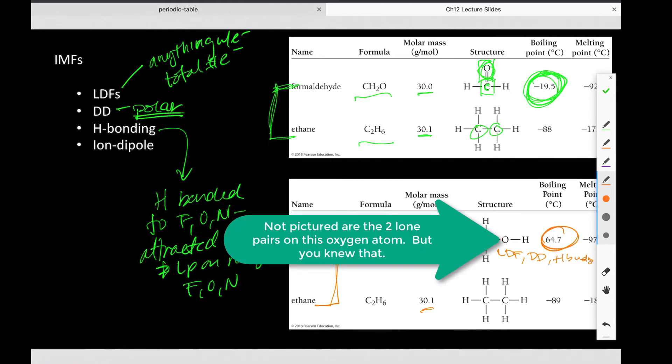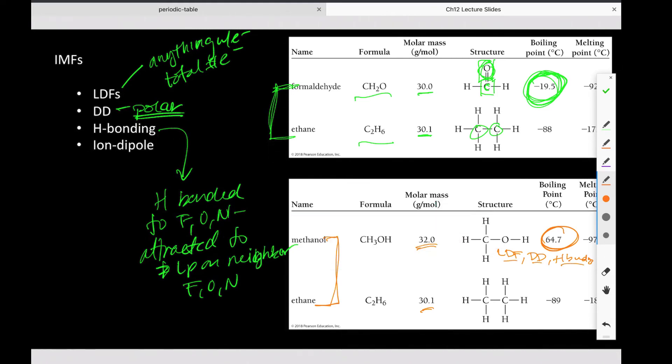And intermolecular forces add together. So if something has all three of these, odds are it's going to have a higher boiling point than anything that has only one or two. Which also leads to a lot of water's unique properties because it is also LDF, dipole-dipole, and hydrogen bonding. And then we get ion-dipole, which is only ever something to consider when we have ions in the presence of dipoles. So pretty much this is anytime we have salt in water, and this would be the resulting force of attraction.